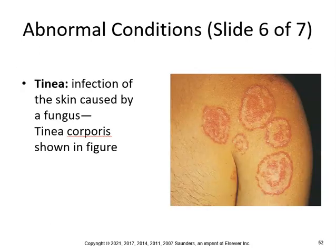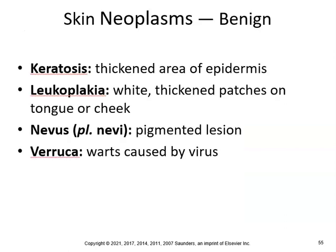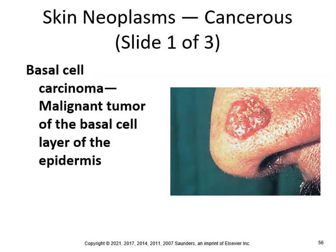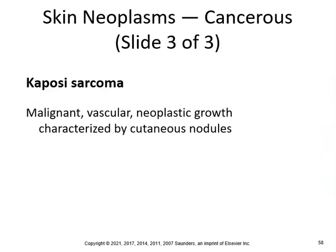Tinea is an infection of the skin caused by a fungus — tinea corporis is shown. Vitiligo is loss of pigment in areas of the skin. Keratosis is a thickened area of the epidermis. Leukoplakia means white thickened patches on the tongue or cheek. A nevus is a pigmented lesion — these are all benign. Verruca — make sure you know what those are — are warts caused by a virus. Know the spelling: nevus, verruca. Basal cell carcinoma is a malignant tumor of the basal cell layer of the epidermis. Squamous cell carcinoma is a malignant tumor of the squamous epithelial cells of the epidermis. Kaposi sarcoma is a malignant vascular neoplastic growth characterized by cutaneous nodules.